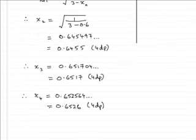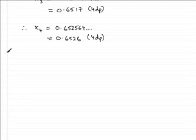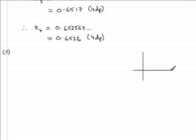Moving on to part C. We've got to show that x equals 0.653 is a root of f(x) equals 0, correct to 3 decimal places. To do this, I consider a sign change. If we imagine the graph of f(x), and we reckon the root is 0.653 to three decimal places, I consider the lowest boundary that 0.653 can be.